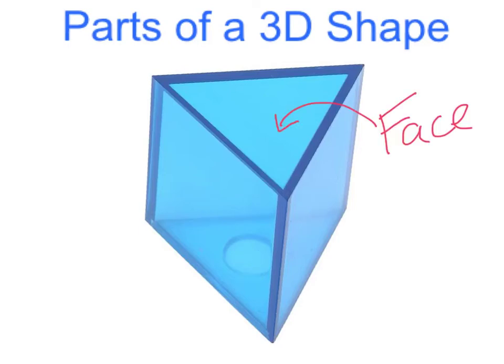The next part of a 3D shape that we are going to discuss is the edge. This is the place on a 3D shape where two faces come together. This shape has nine edges.